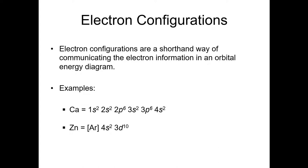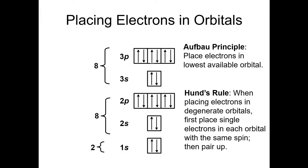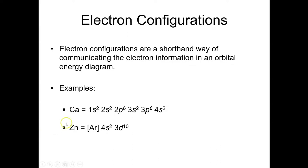Electron configurations are simply a shorthand notation for communicating all the information that was in an orbital energy diagram. Rather than having to draw all these boxes and arrows and label them, we can condense it down. For example, the electron configuration for calcium is 1s2, 2s2, 2p6, 3s2, 3p6, 4s2.